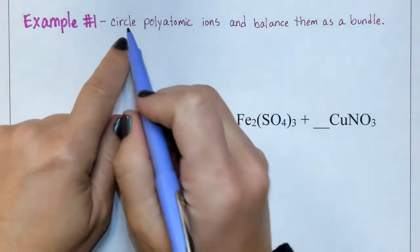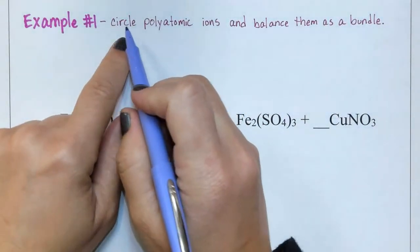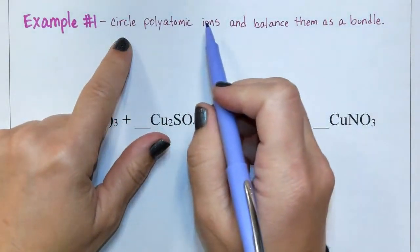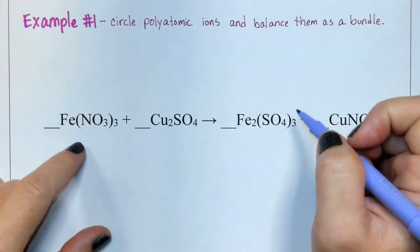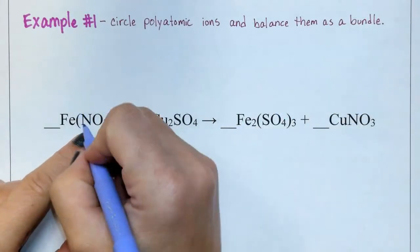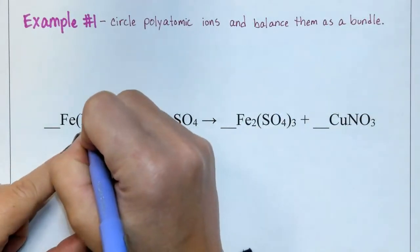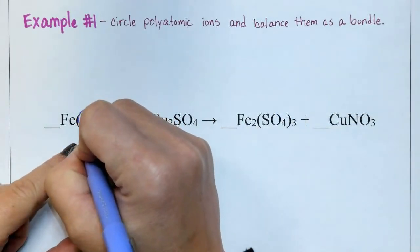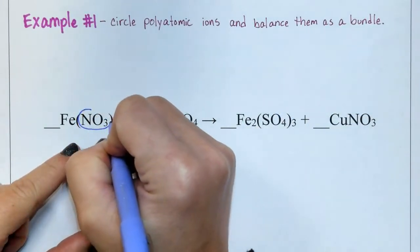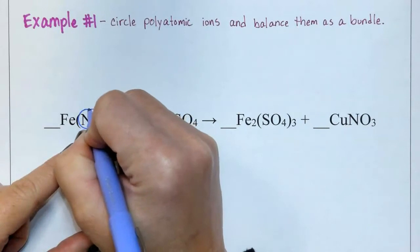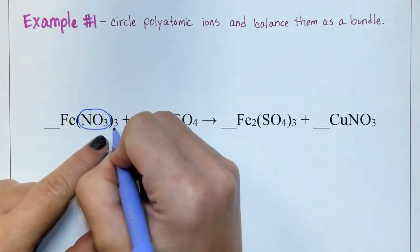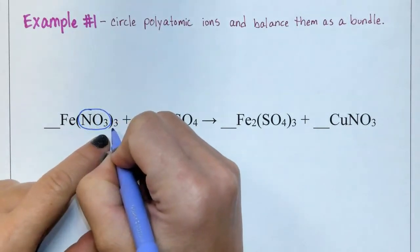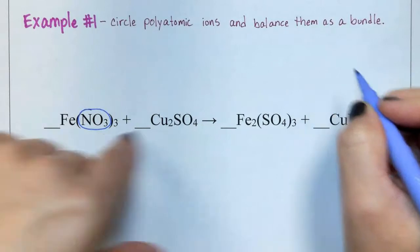Example number one: you want to circle polyatomic ions and balance them as if they were a bundle. For example, NO3 is nitrate. I'm going to circle it and note that there are three nitrates on the reactant side.